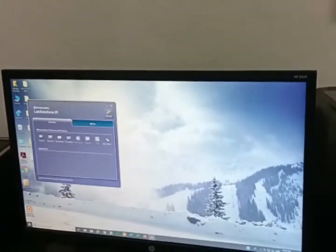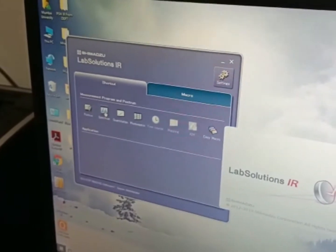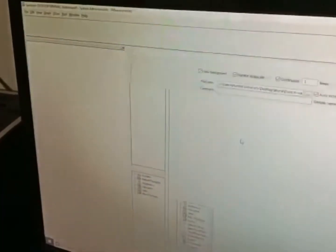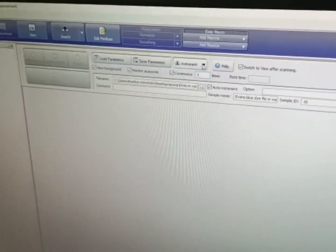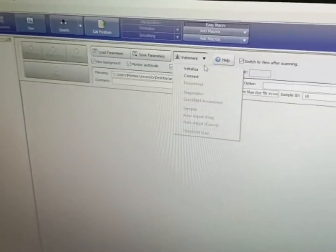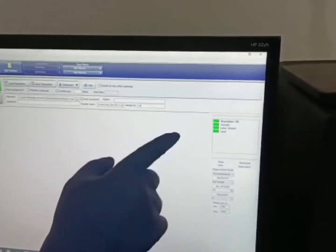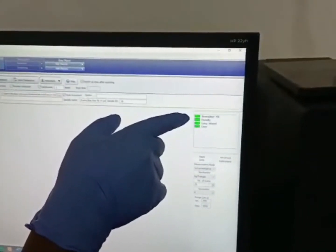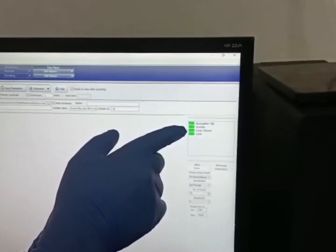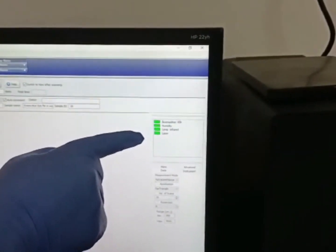Now start the LabSolution software from the computer and click on spectrum mode, then do the initialization. During this initialization, you will see four different green lights on the right hand of this PC: one light for beam splitter, second for humidity, third for lamp, and fourth for laser. Now your instrument is connected with the PC so we can take the reading for the sample.